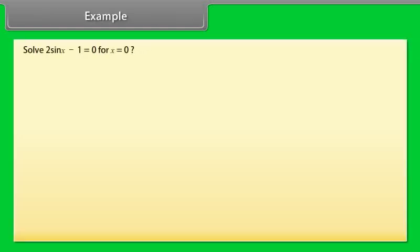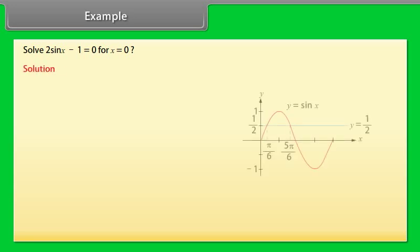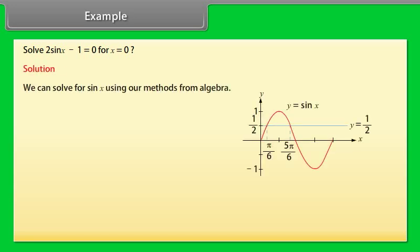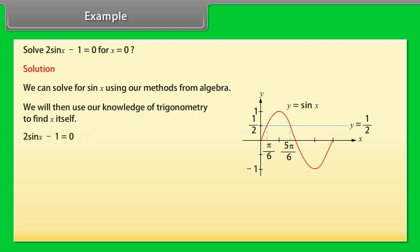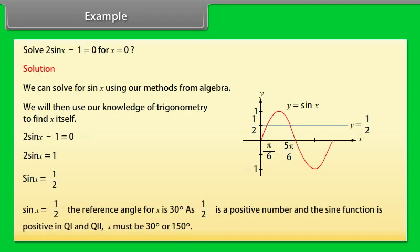Example: Solve 2sinx − 1 = 0. Solution: 2sinx = 1, so sinx = 1/2. The reference angle for x is 30 degrees. Since 1/2 is positive and the sine function is positive in quadrants 1 and 2, x must be 30 or 150 degrees.